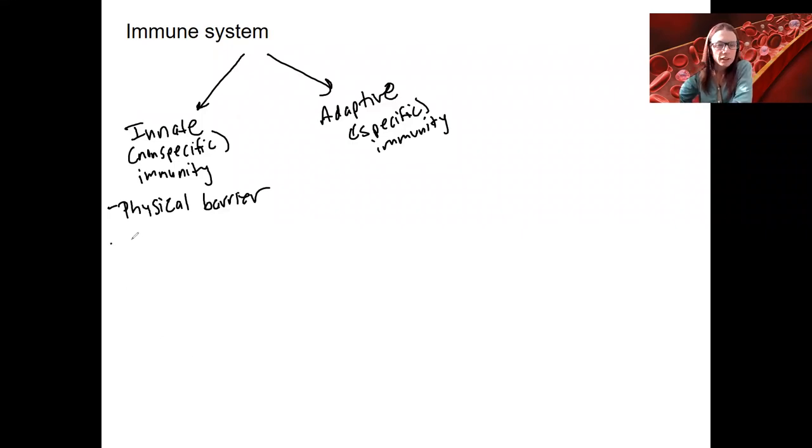innate immunity also includes a bunch of cells and other stuff. So, we've got phagocytes. Remember those? Those cells that can do phagocytosis, which is a type of endocytosis. So, there were three cell types we talked about, neutrophils, specialized for bacteria, eosinophils, especially important for parasitic infections, and then macrophages.